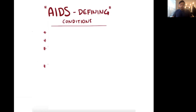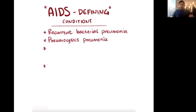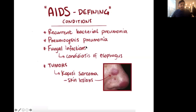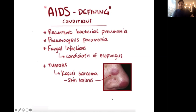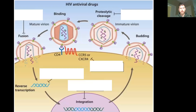People who progress to AIDS will have recurrent infections. These include pneumocystis pneumonia — silver stain, treat with Bactrim; remember hypoxemia is due to interstitial infiltrates causing a diffusion defect, which is why we use steroids. Fungal infections are also key — candidiasis of the esophagus and other immunocompromised esophagitis such as CMV or HSV. And Kaposi sarcoma, which is caused by HHV-8.